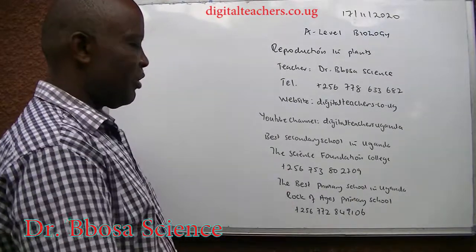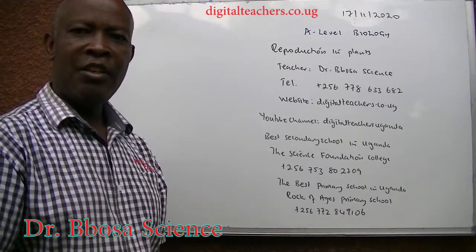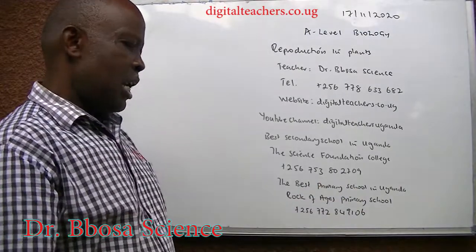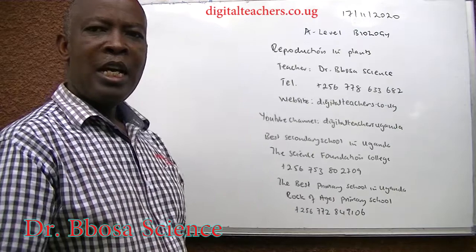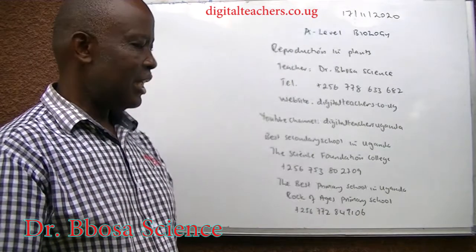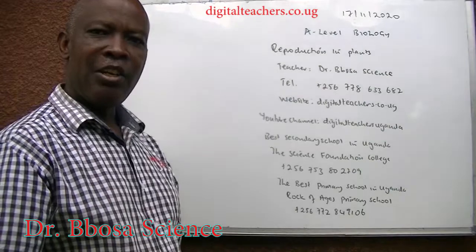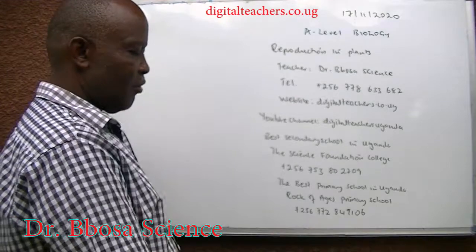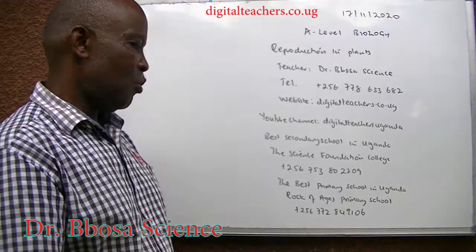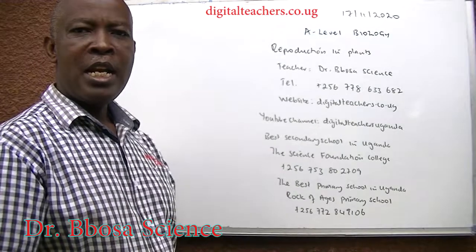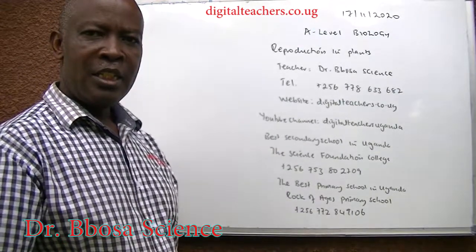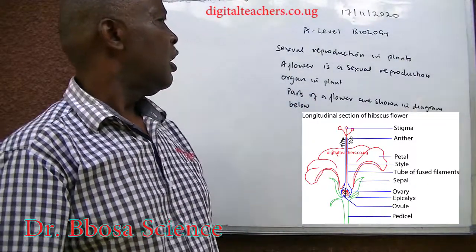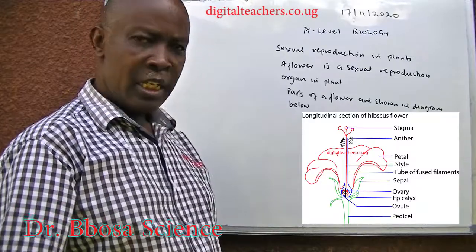The best secondary school in Uganda is the Science Foundation College, plus 256-753-827-09. The best primary school that will cultivate the science culture in your child is Rock of Ages Primary School, plus 256-772-849106. A flower is a sexual reproduction organ in a plant.